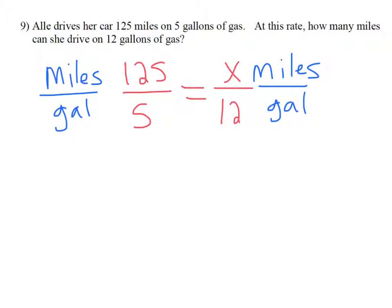Now recall that to solve a proportion, we cross multiply. 5 times x is 5x. 125 times 12 is 1,500. Now we solve this like any linear equation we've solved before.